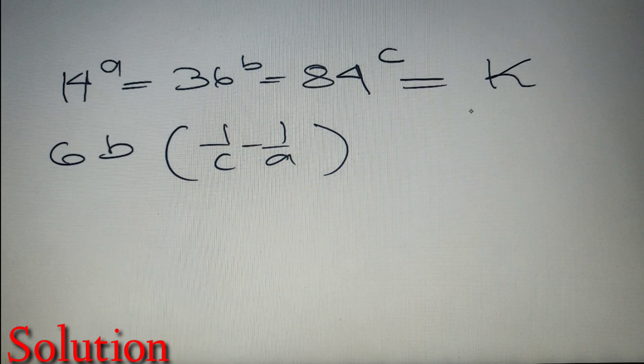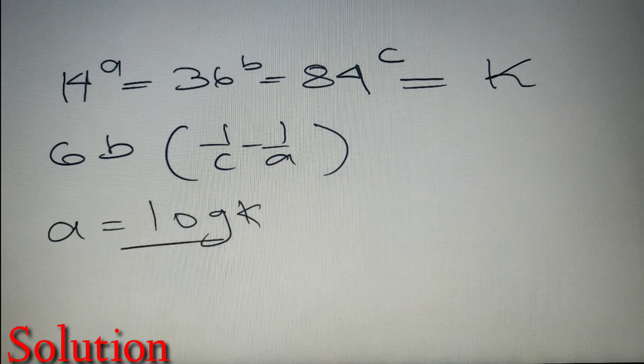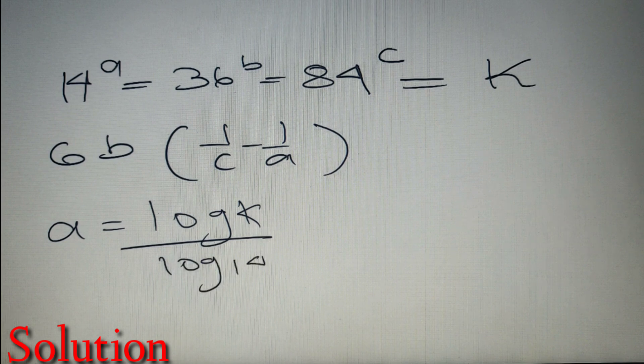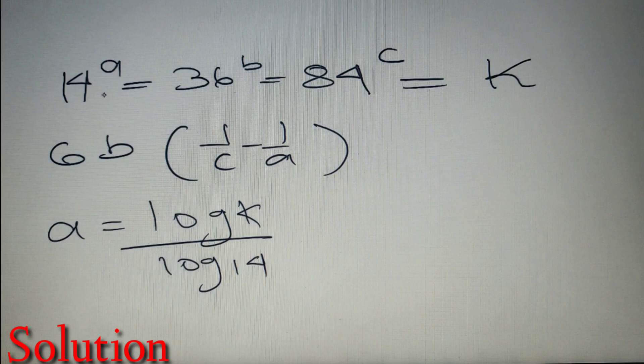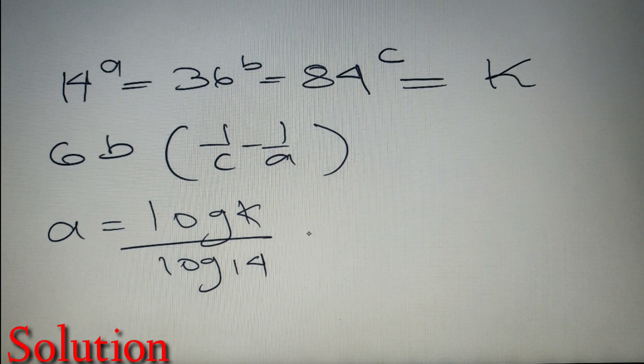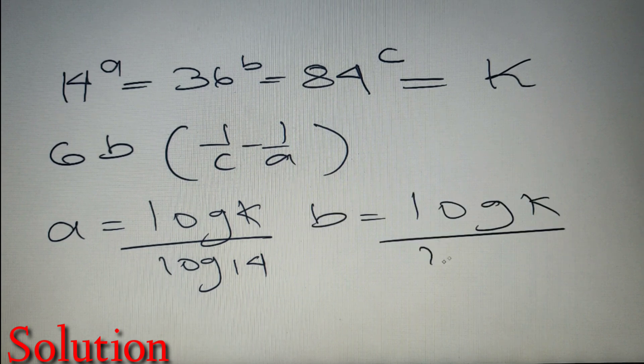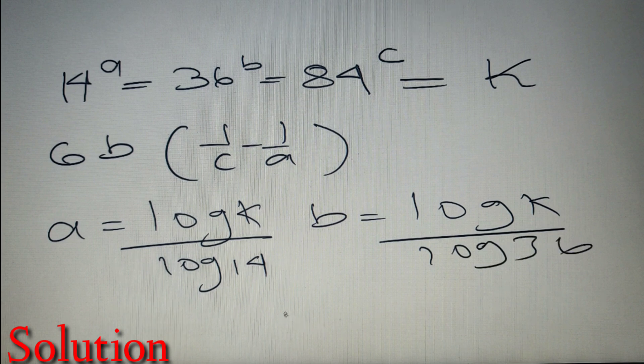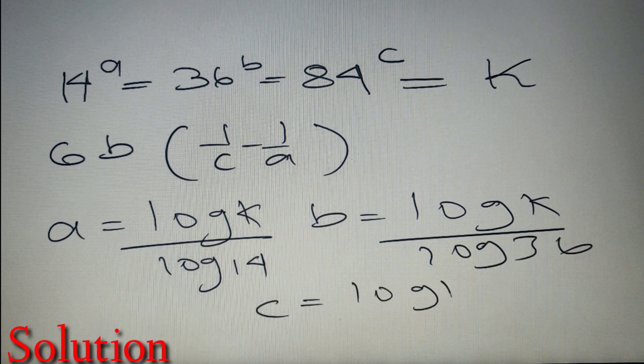So if 14 raised to power A is equal to K, then I can say that A is equal to log K by log 14. Now I have skipped one step over here—you can see that if we take log on both sides we will get A log 14 is equal to log K, which is equivalent as A equal to log K by log 14. Now doing the same process I will get that B is equal to log K by log 36, and C will be equal to log K by log 84.